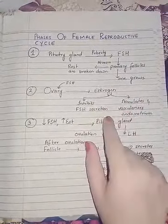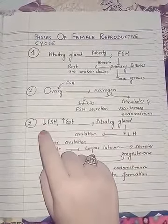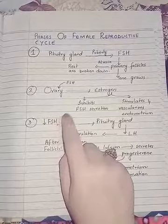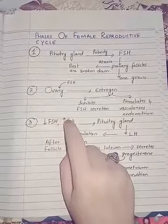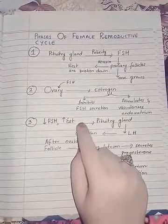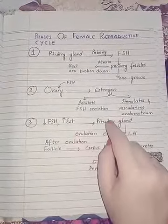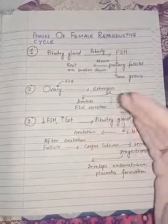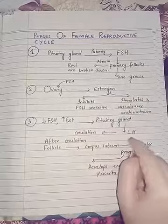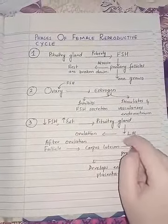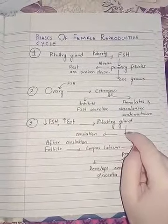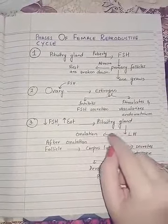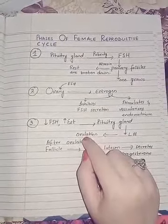The decreased level of follicle stimulating hormone and the increased level of estrogen together stimulate the pituitary gland again, and as a result the pituitary gland secretes luteinizing hormone (LH). The luteinizing hormone stimulates ovulation.